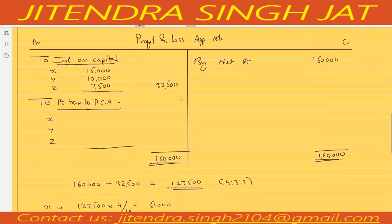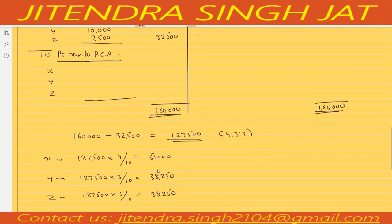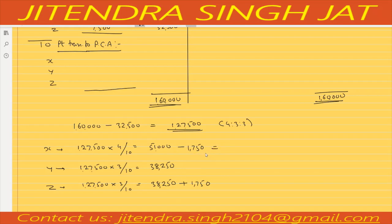The guarantee given by X to Z is 80,000 per year. For half year it would be 40,000. Z is only getting 38,250, so 1,750 more is required. Since X gave the guarantee, X will sacrifice and give 1,750 to Z.